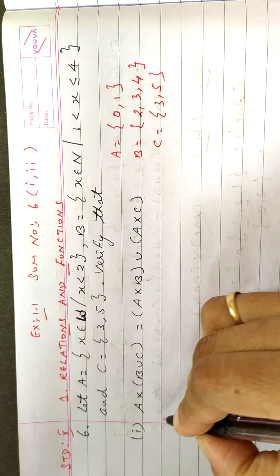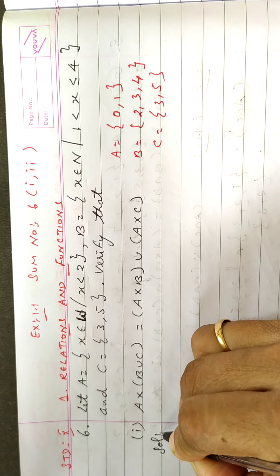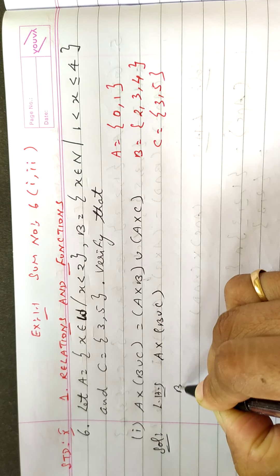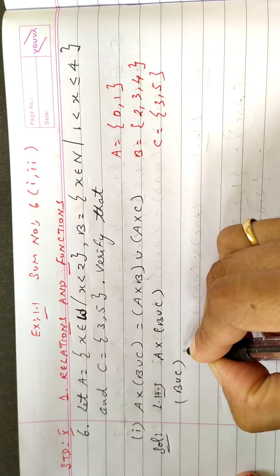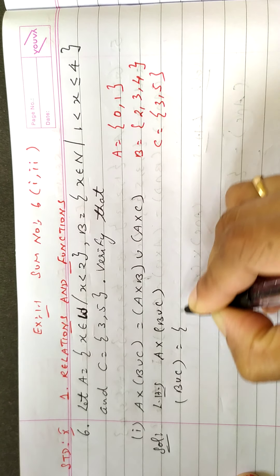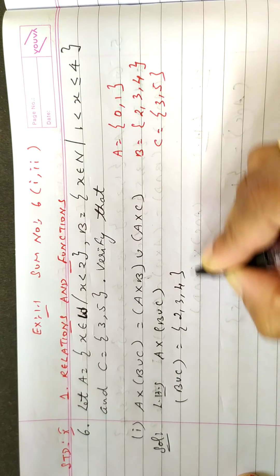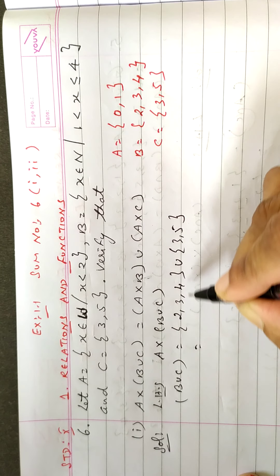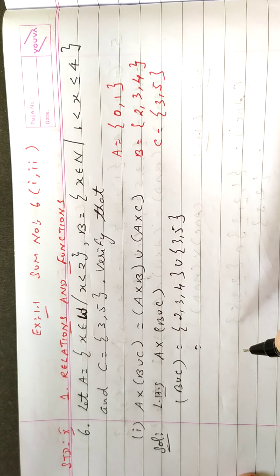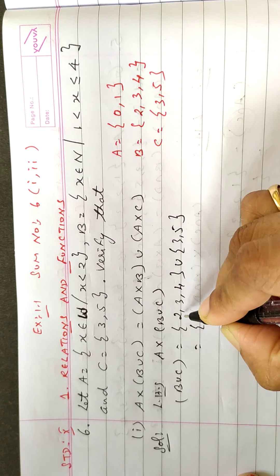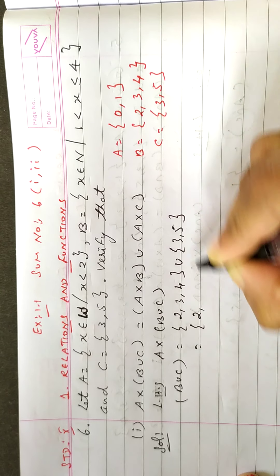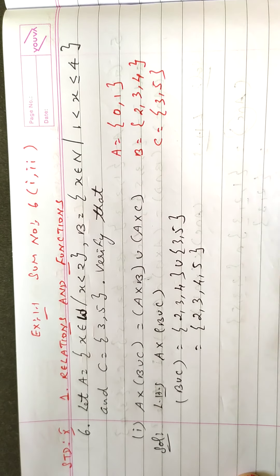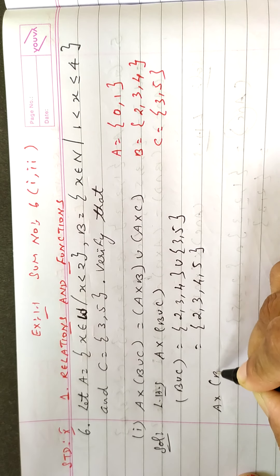Now, we find the answer. First we take left hand side, that is A cross B union C. First, we find B union C. The set B is 2, 3, 4, then union set C is 3, 5. Union means all elements, but repeated elements write only once. So you get 2, 3, 4, 5. So this is the answer.